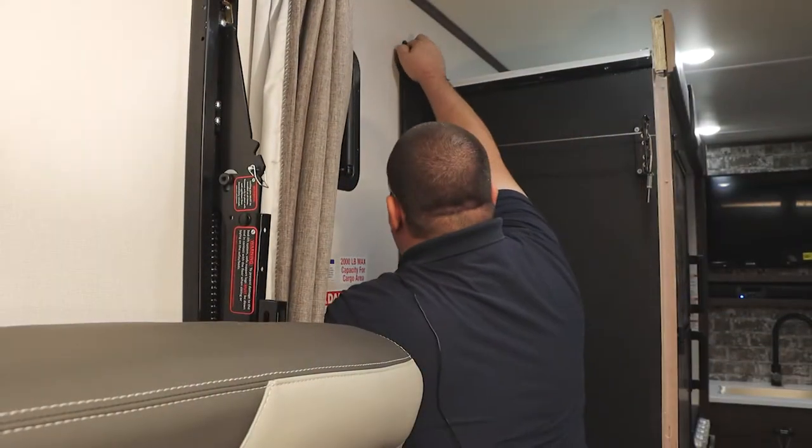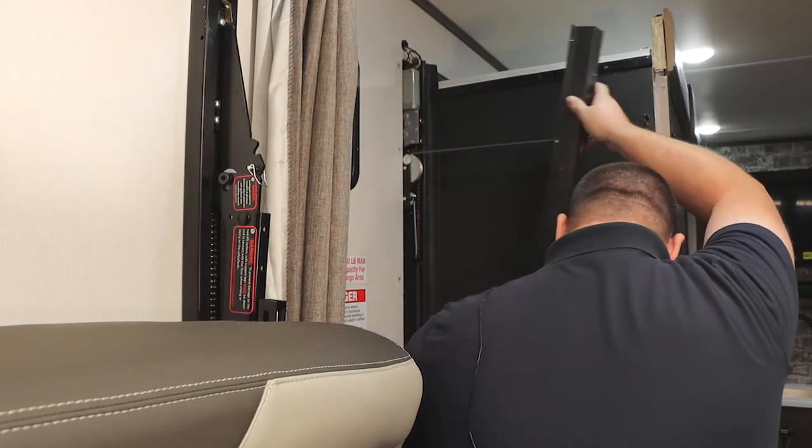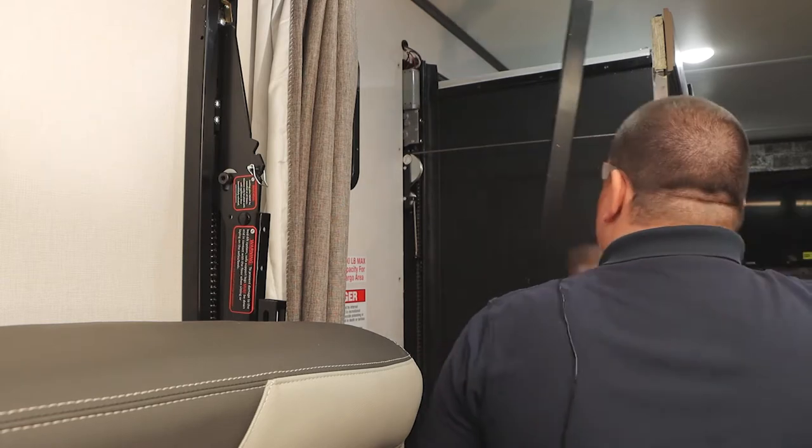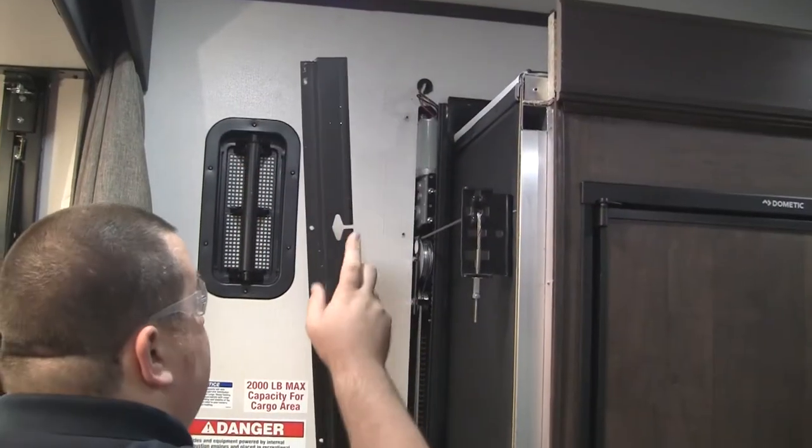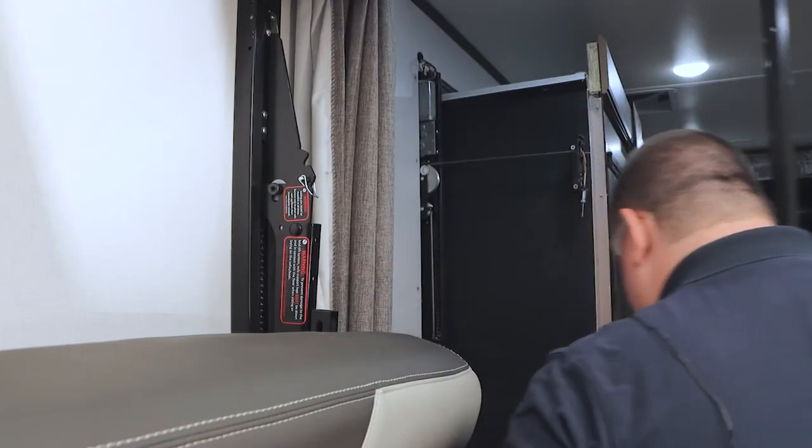Then from there the jam will just roll out and unclip itself. You got to make sure that these cables are in alignment with this to be able to fully remove it.